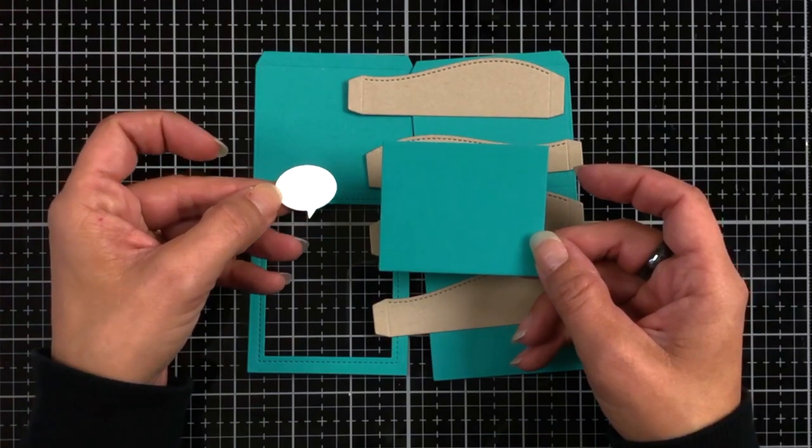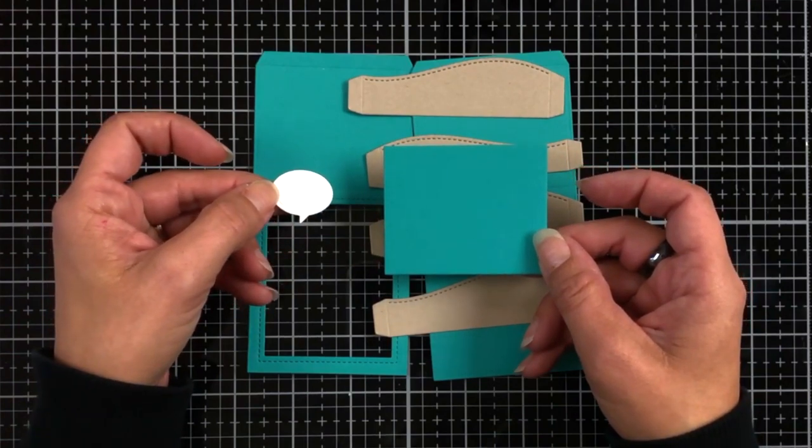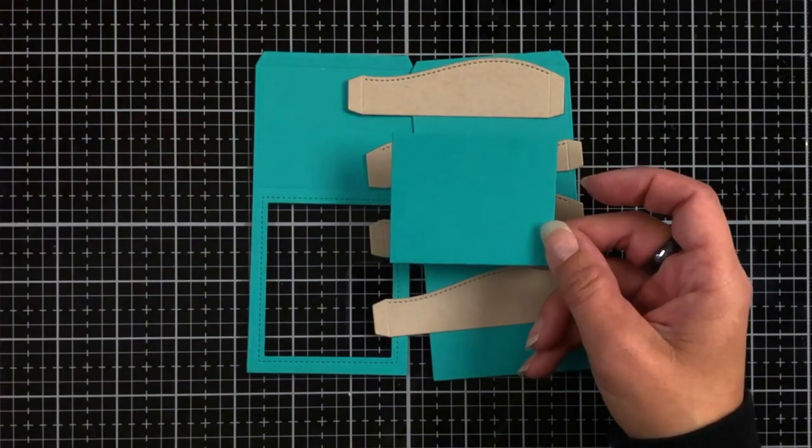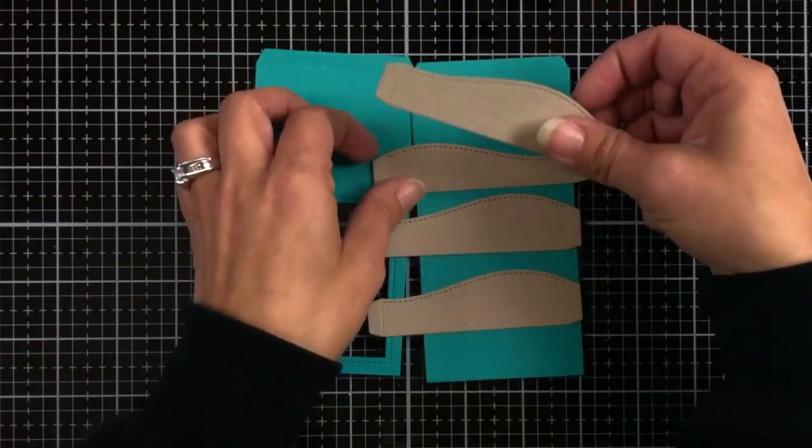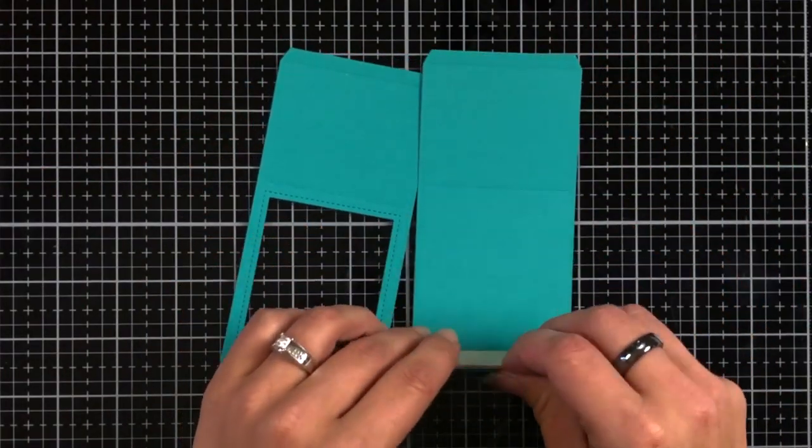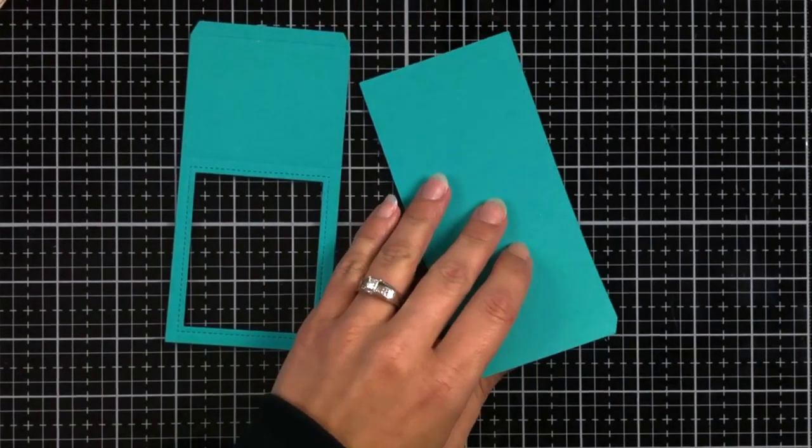And then I also have a speech bubble here that I die cut using the Say What gift tags. And it's just a speech bubble that's going to be for the front of my card.